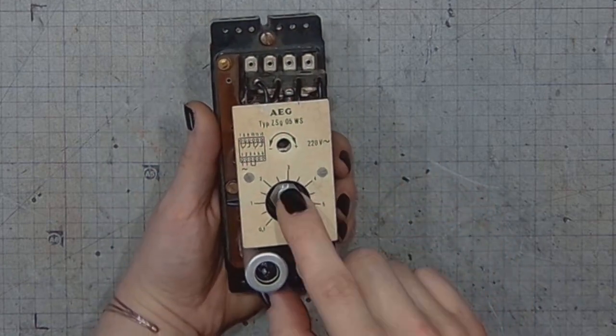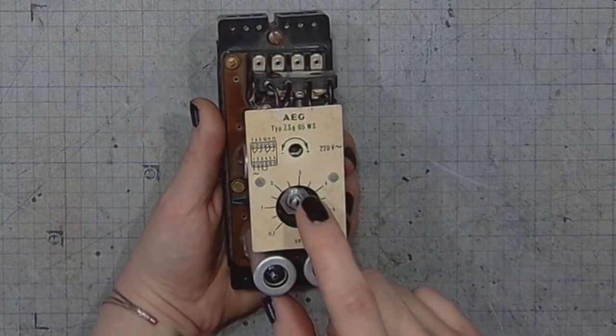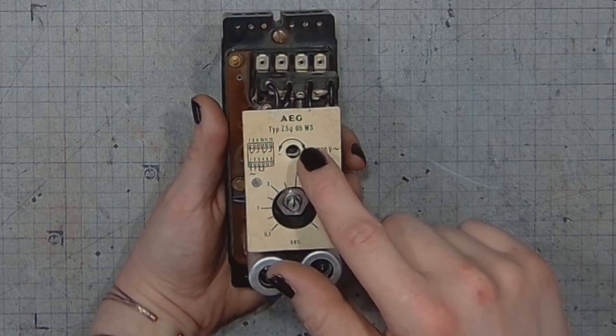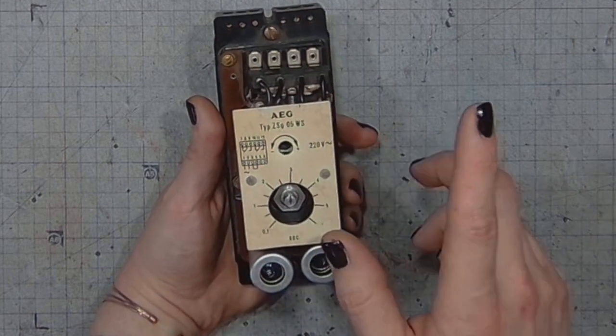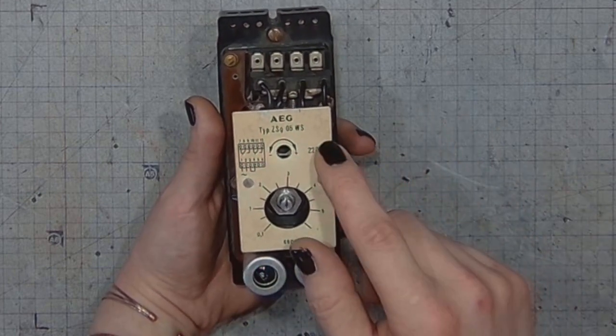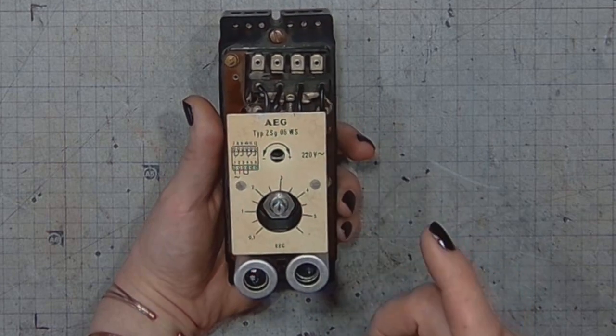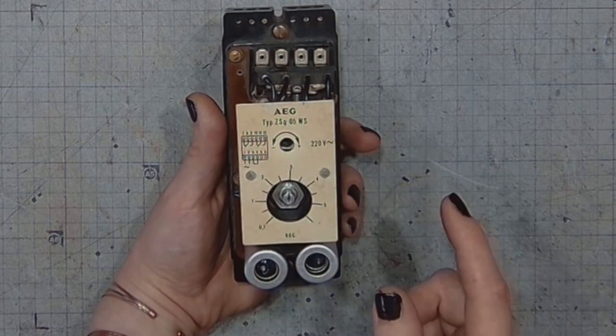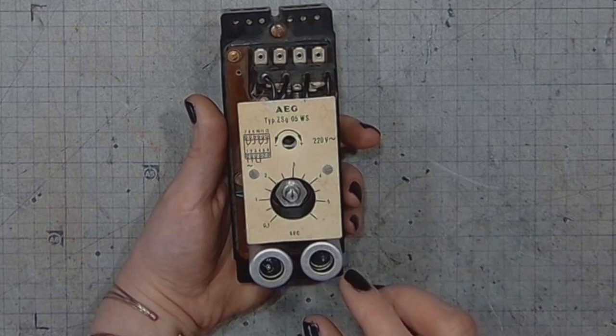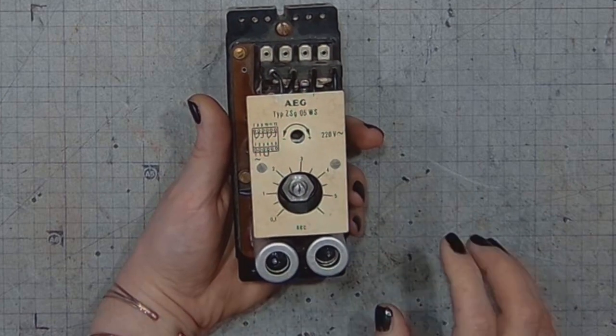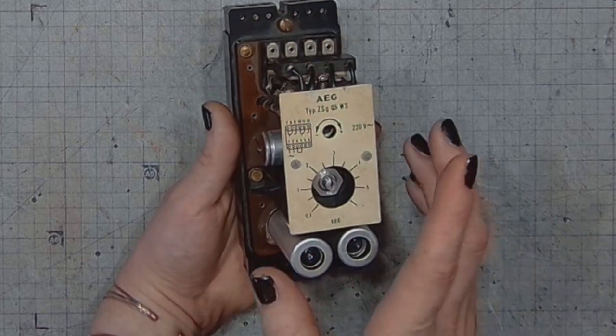We've got the time adjustment potentiometer, we've got a calibration potentiometer. This device is meant for work with 220V AC, but it might as well work with 220V DC.